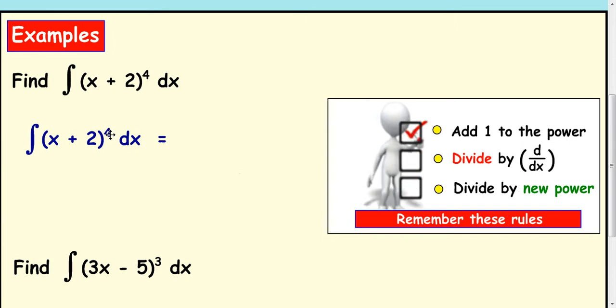Integrate x plus 2 to the power of 4 with respect to x. So I always find the easiest way to do it is to put your x plus 2 at the top, and it's really 1x plus 2, and increase the power. What you then do is, underneath, because you're dividing by the new power and the derivative of x here, which is 1, just write 1 times 5 in the bottom. And remember your plus c.